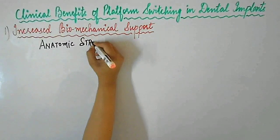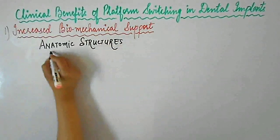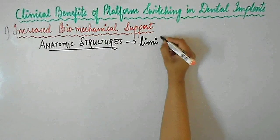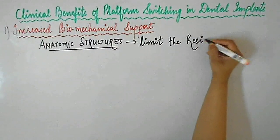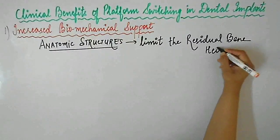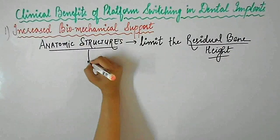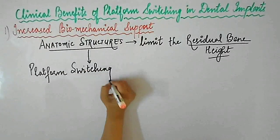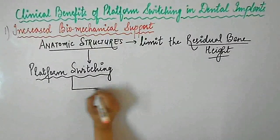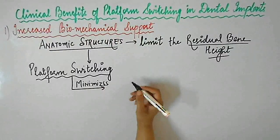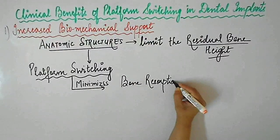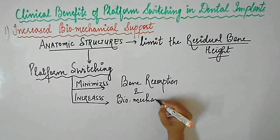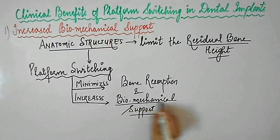Platform switching provides increased biomechanical support. Where anatomic structures such as the sinus cavity, nasal floor, incisive canal, or alveolar nerve limit the residual bone height, platform switching can be used because it minimizes bone resorption and increases the biomechanical support available to the implant.